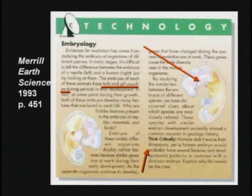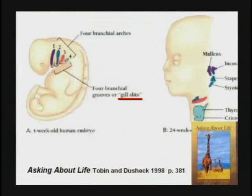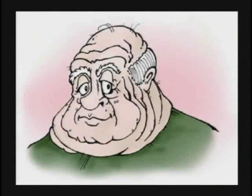They tell the kids the embryo — the baby growing in the mother — has gills like a fish. Gills? That's a lie. Those are not gill slits. Those little folds of skin you see on the embryo grow into bones in the ear and glands in the throat. They never have anything to do with breathing. My uncle had five or six chins and he couldn't breathe through any of them but the top one.